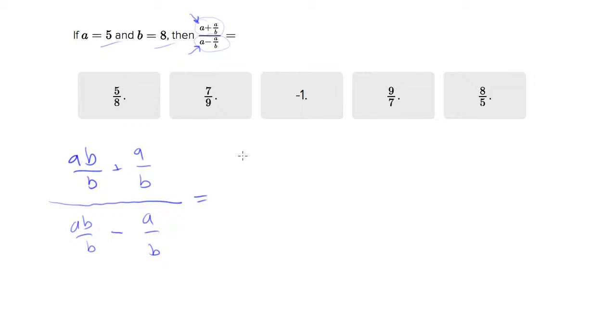So that equals, in the numerator I get ab plus a over b, and in the denominator I have ab minus a over b. Now we have b in the denominator on both of these, so those actually cancel out, and that's really nice.